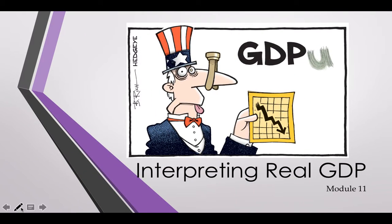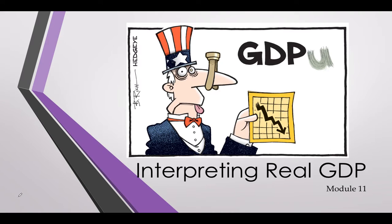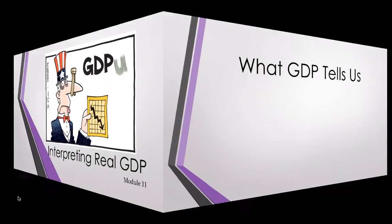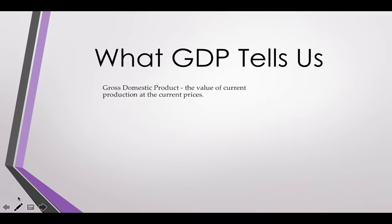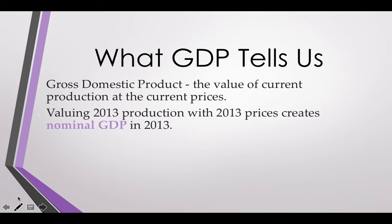We're going to talk about GDP, the first of the three major macroeconomic indicators, and we'll continue to talk about GDP throughout the entire course. Basically, GDP tells us the value of current production at current prices — how much we're producing, how much of what we're producing costs, and the total amount that adds up to. When we look at a particular year's output and that particular year's prices, we are looking at nominal GDP.